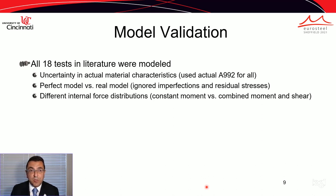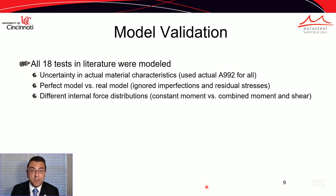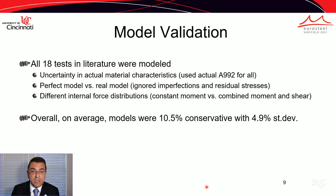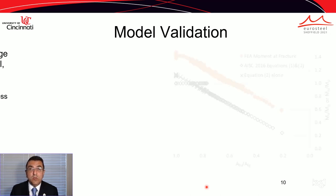All 18 tests in the literature were modeled as part of the validation process. Key differences included uncertainty in actual material characteristics — we used A992 for all models since experiments did not report measured stress-strain characteristics. Our models were perfect, ignoring imperfections and residual stresses, and had a constant moment distribution rather than the linearly variable moment of some beam-connection tests. Even with these differences, the model results were 10.5% conservative with a 4.9% standard deviation, which we deemed acceptable.